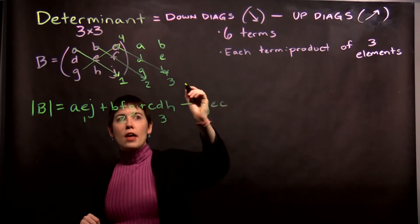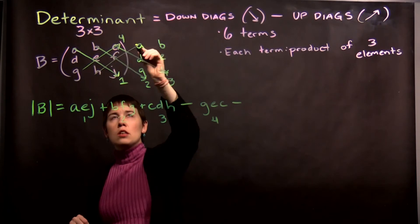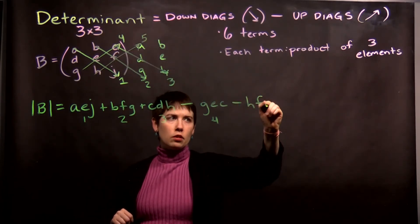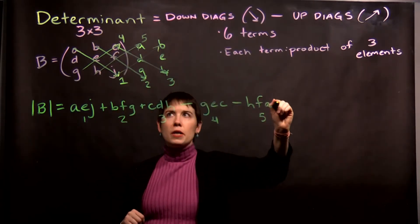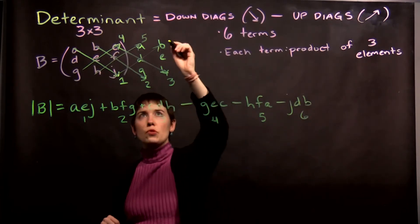And then, the next one. Again, minus term 5, H, F, A. And then, finally, minus J, D, B. This was term 6.